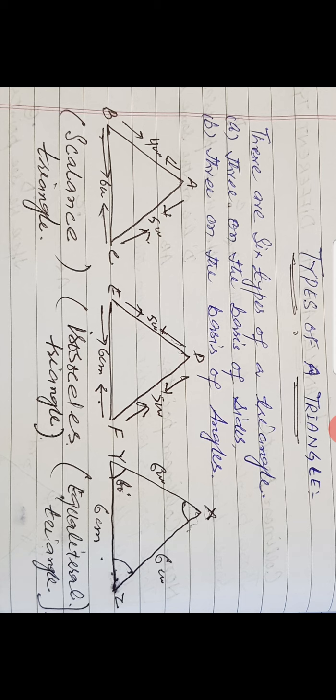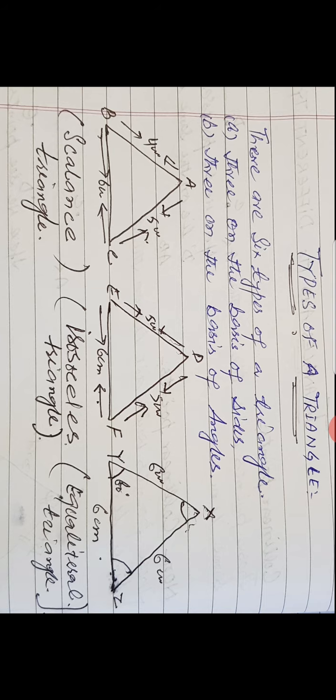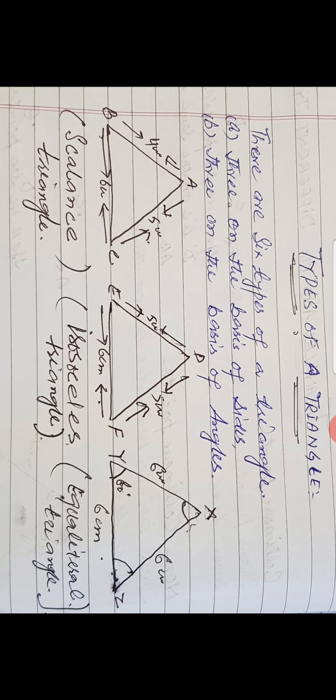In triangle XYZ, all three sides are equal in length — each is six centimeters. This type of triangle is called an equilateral triangle. And in an equilateral triangle, all angles are also equal, each measuring 60 degrees. This also makes it equiangular.